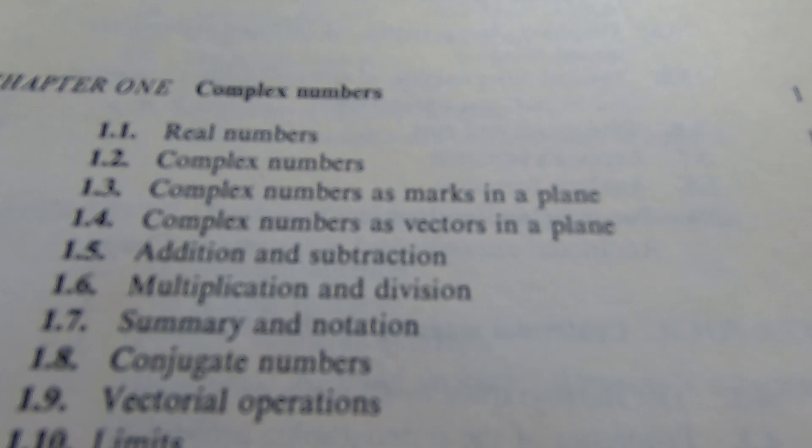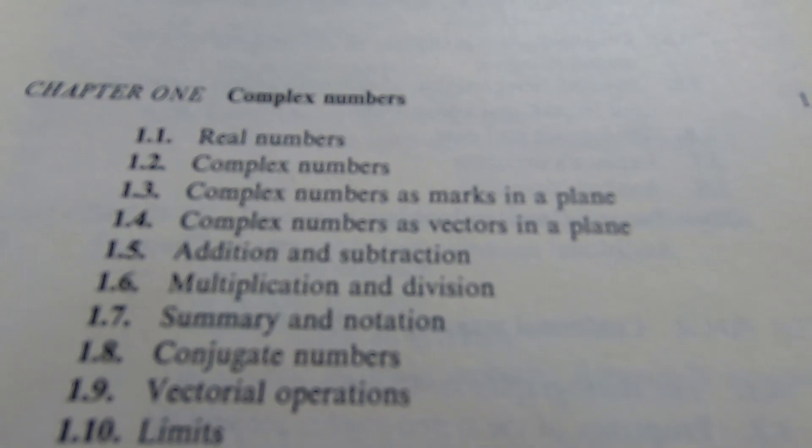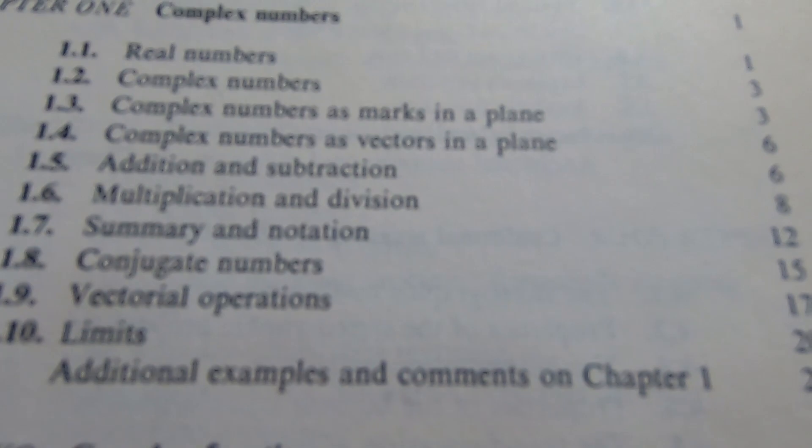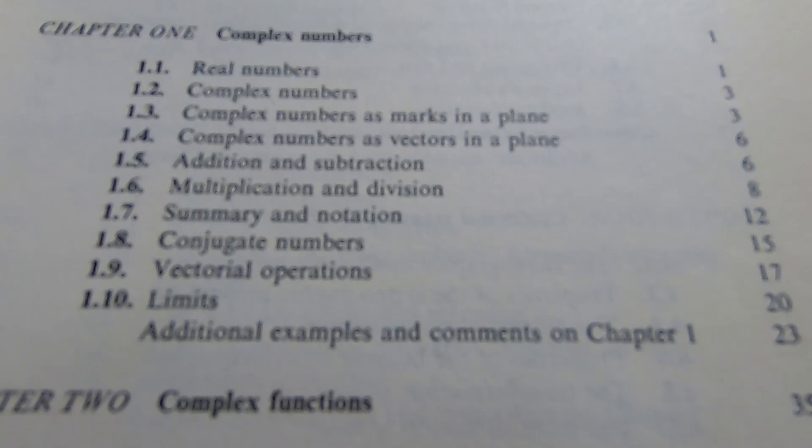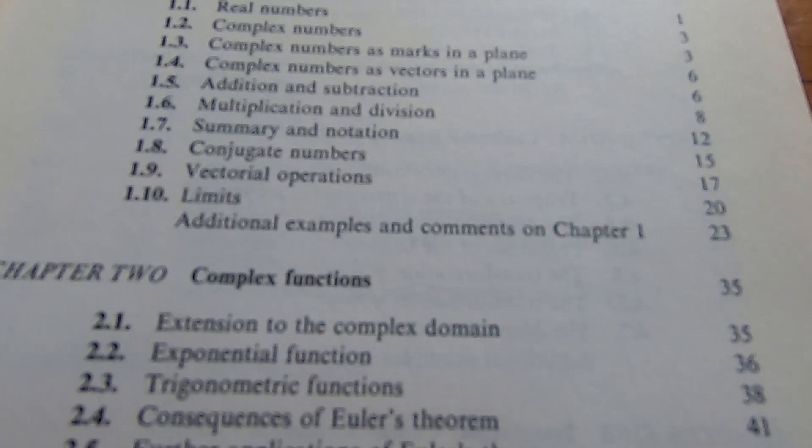This is the content. It starts off with complex numbers from the beginning. Real numbers, complex numbers, complex numbers as marks in a plane—I love that terminology—complex numbers as vectors in a plane. It talks about addition and subtraction. Really basic. Anyone can pick up this book and just start with chapter one. It's written at a very introductory level at the beginning of the book.